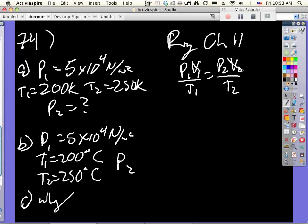I can see P2 is going to equal P1 times T2 over T1. So, that gives me 5 times 10 to the 4th newtons per square meter, again, which is the same as a Pascal.